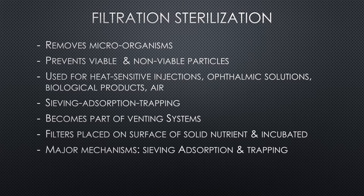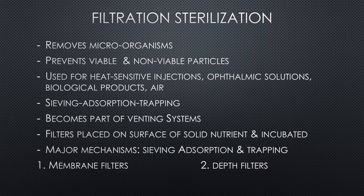The major mechanisms are sieving, adsorption, and trapping within the matrix of the filter material. There are two types of filters: membrane filters and depth filters. Membrane filters are made from cellulose ester or other polymer materials, while depth filters are fibrous pads, sintered glass, and sintered ceramic products.